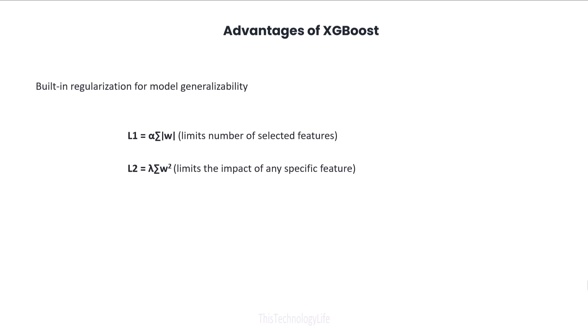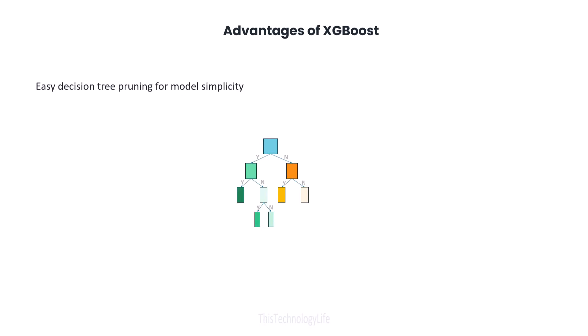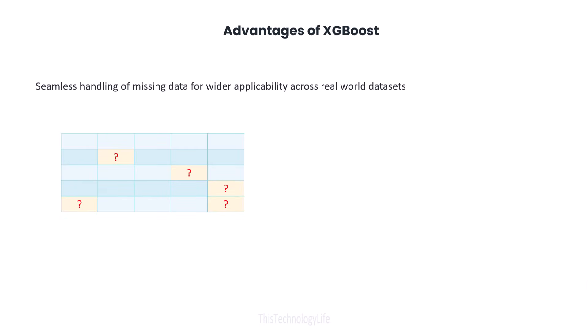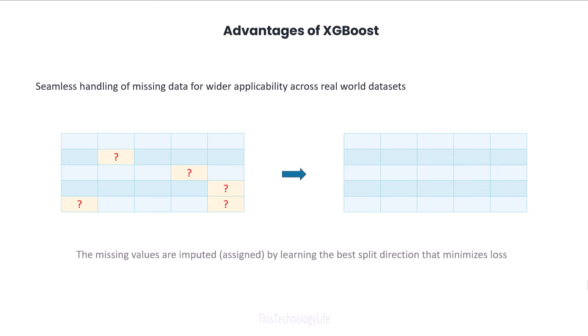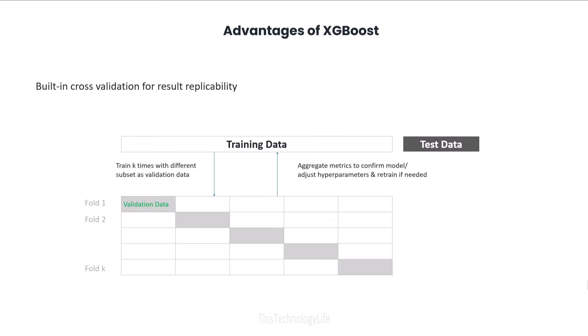The XGBoost library provides several advantages, including built-in regularization to both not be reliant on unimportant features or be too sensitive to any specific feature, thereby preventing overfitting. The minimum threshold for the gain and similarity score can be set so that the decision trees are pruned of any unnecessary splits. The library can also handle missing values in the data and has built-in cross-validation capabilities to ensure that the results can be replicated across runs.